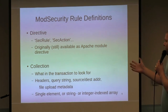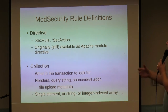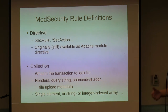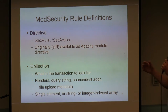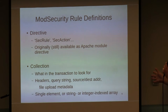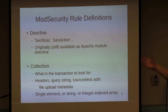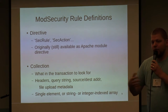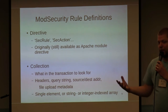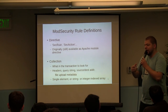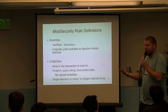The second part of the rule set is the collection — what are we looking for? The headers, something in the query string, the client IP, metadata about file uploads (metadata, not the actual upload content). There are capabilities to look at a single element, an entire array of a queryable query string, or different parts of a POST body.